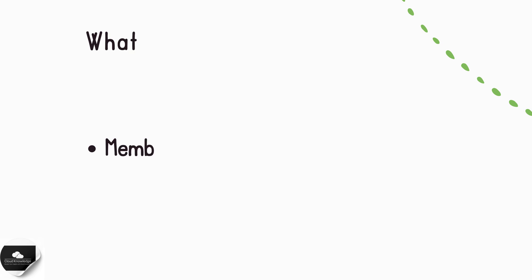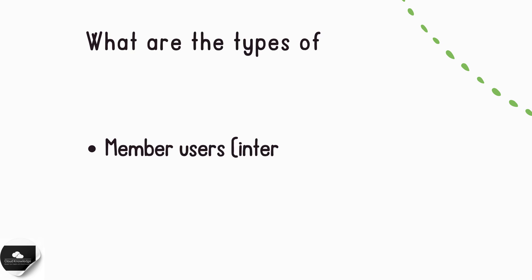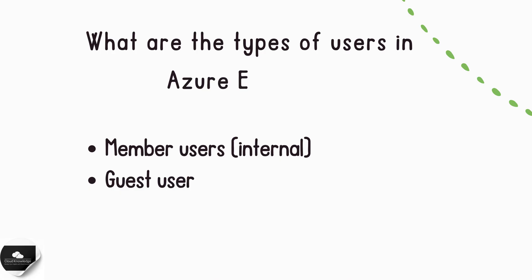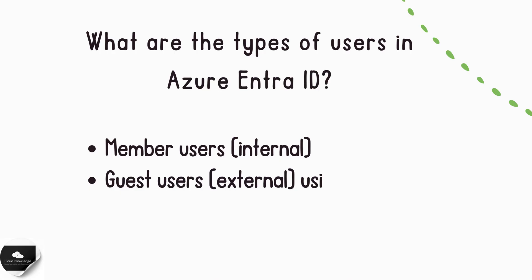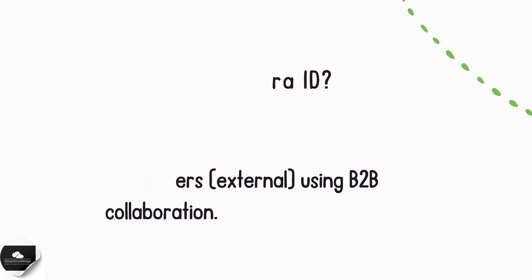Next: what are the types of users in Azure Entra ID? There are two main types: member users, who are internal employees, and guest users, who are external collaborators via B2B. For example, vendors or partners logging in with their own Microsoft or Gmail accounts. This helps organizations manage both internal staff and external users securely.